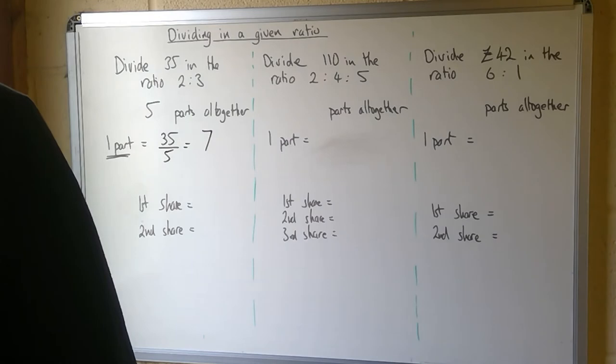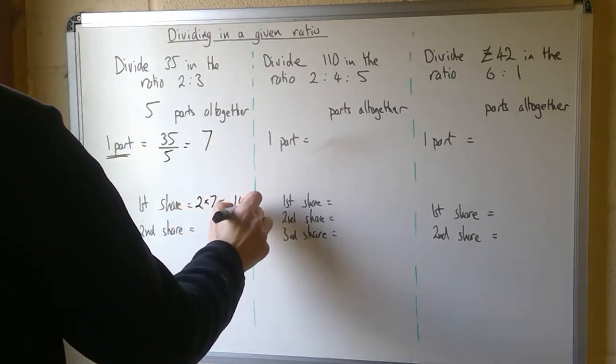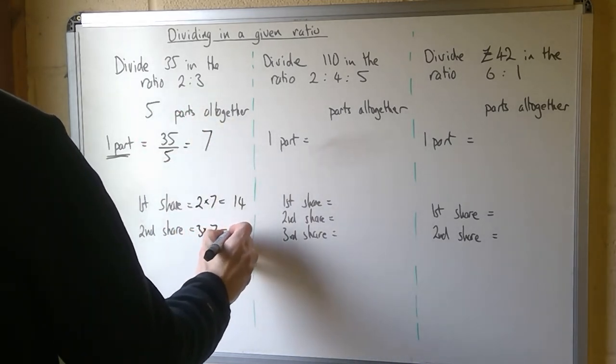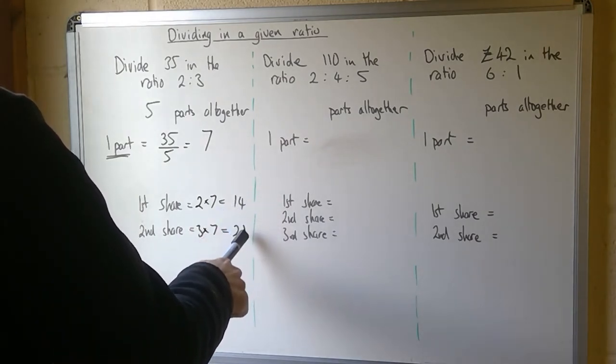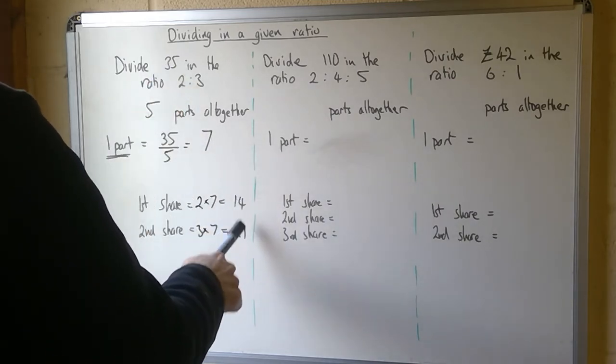So when I look to share it in the ratio 2 to 3, the first share is two lots of 7, which will be 14, and the second share is three lots of 7, which will be 21. And I can check this is correct. So when I add these two together, I should always come back to my original amount. In this case, 14 add 21 is 35.